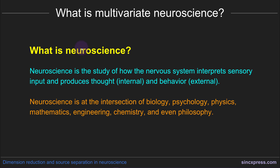So first of all, what is neuroscience? Neuroscience is the study of the nervous system — how the nervous system interprets sensory input, that's all of your senses like vision and hearing and taste and so on, how the nervous system produces thought, which is all sorts of internal processes that are not necessarily observable or measurable to an outside person, and ultimately how the nervous system converts all this sensory information, integrates it with thought, and generates some behavior, which is the external actions — this is the way that you interact with the world.